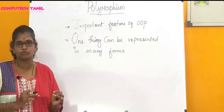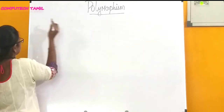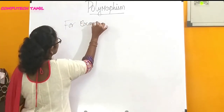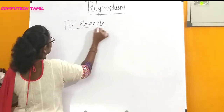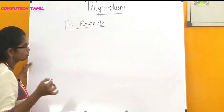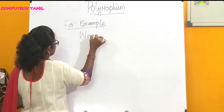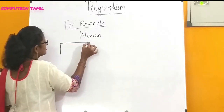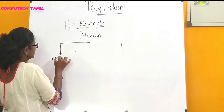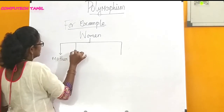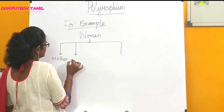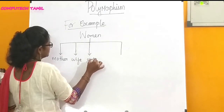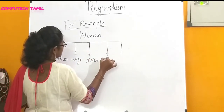Let's explain this with an example. For example, take women. Women can appear in different forms: mother, wife, sister, daughter, and so on.